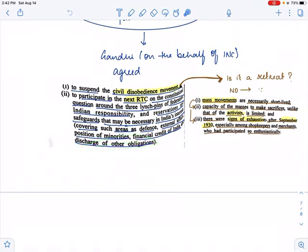Now if you see Gandhi agreed that he would suspend the civil disobedience movement, this sentence can be shocking. If Gandhi agrees that he would suspend the civil disobedience movement, does it mean that we have lost in this movement? Does it mean that the Britishers have won? Does it mean Britishers were successful in suppressing our movement? No, not really. It's not a retreat at all.